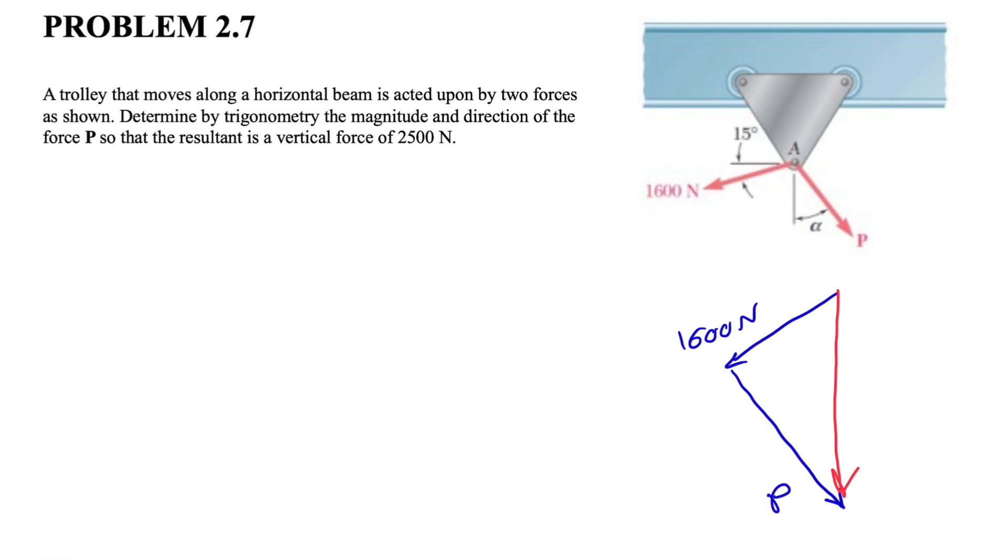From the question we know that R is 2500 newtons, and we also know this angle here is 15 degrees. So since this is a right triangle, this will be 90 minus 15, or 75 degrees. We need to figure out the force P, both magnitude and direction.